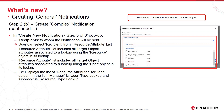Let us spend a little more time understanding the recipients to whom general notifications can be sent. In the Create New Notification Step 3 of 3 pop-up, the resource attribute list includes all target object attributes associated to a lookup using the resource object or the user object in its lookup. For example, for the idea object, manager is a user-type lookup and sponsor is a resource-type lookup.